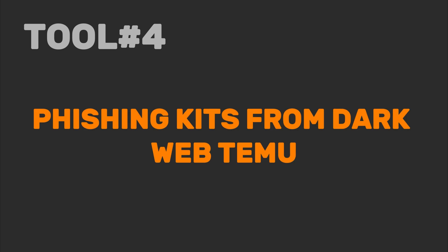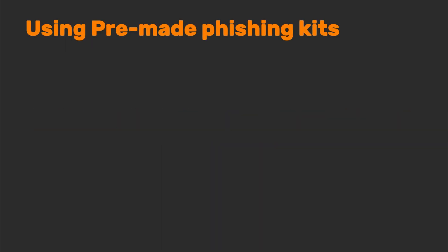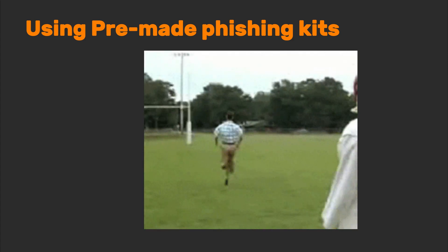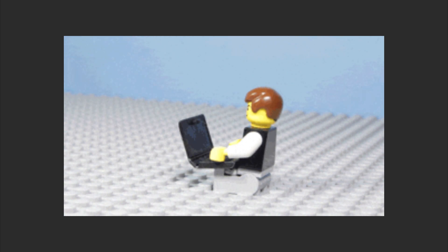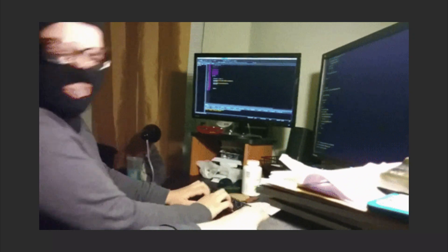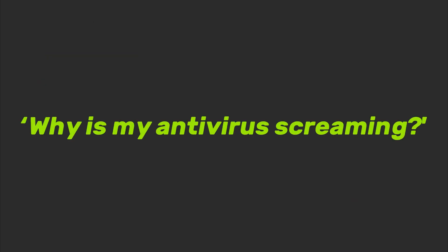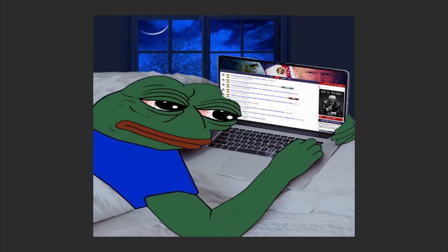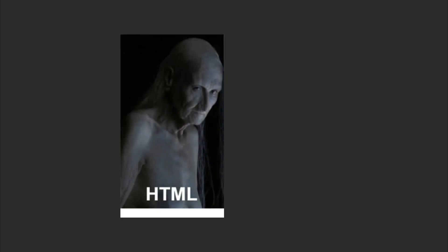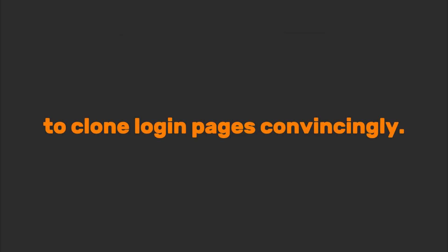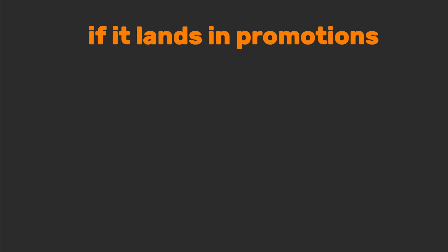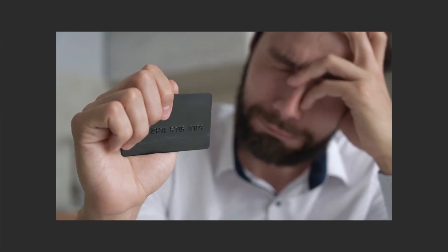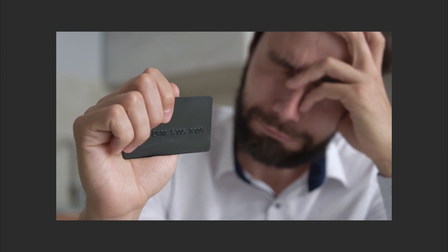Tool number four: phishing kits from dark web Temu. Using pre-made phishing kits from sketchy forums is the worst thing you can do. Half these kits log your own data and send it elsewhere. They're detected by modern email filters faster than you can say 'Why is my antivirus screaming?' Better moves: learn GoFish or SE Toolkit to build your own campaigns. Study HTML plus CSS to clone login pages convincingly. Test against Office 365's filters or Gmail — if it lands in promotions, you failed. And if your phishing page looks like it was designed in Microsoft Paint, just stop.